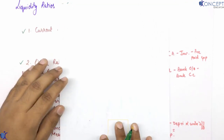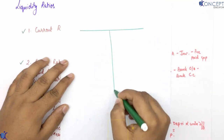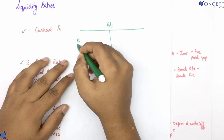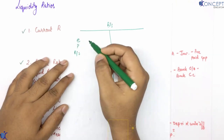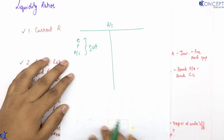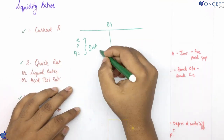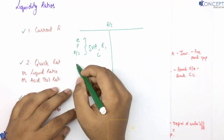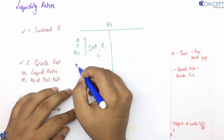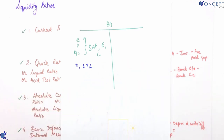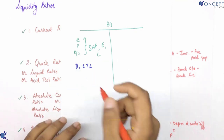Balance sheet mein ratios ke andaar socho — yahan par hota hai equity, preference and reserves and surplus. Isko hum bolenge shareholders fund, ya equities, ya capital. Uske baad hamare paas hoti hain current liabilities.